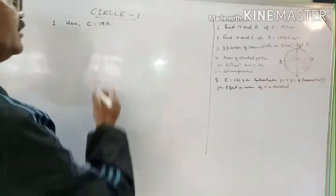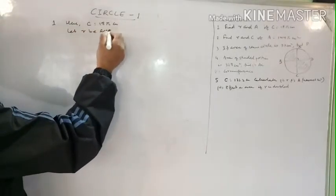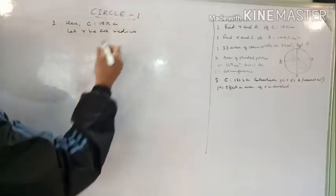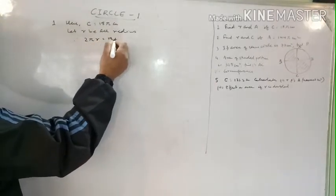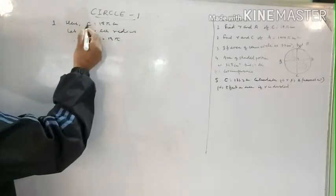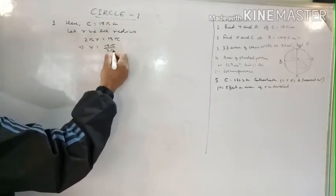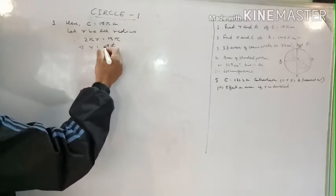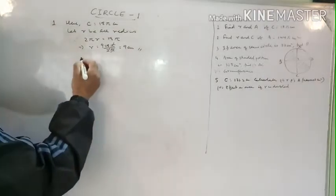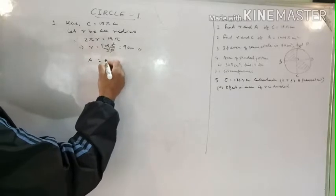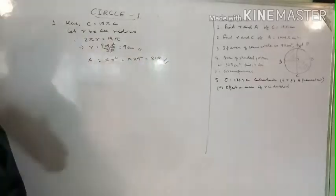Given: C equals 18π cm. Let r be the radius. Using the circumference formula, 2πr equals 18π. This implies r equals 18π divided by 2π; pi cancels, giving r equals 9 centimeters. That is the first answer.